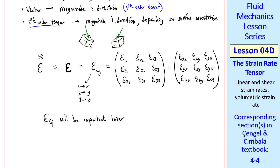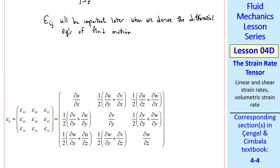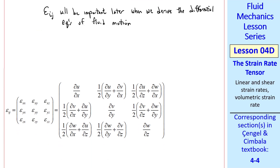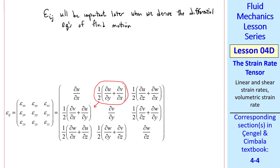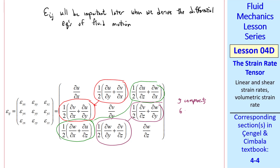ε_ij will be important later when we derive the differential equations of fluid motion, where we relate the strain rate tensor to the stress tensor. Using the components derived previously, we have the normal strain rates on the diagonals and the shear strain rates on the off-diagonals. This tensor is symmetric, since ε_xy equals ε_yx, ε_xz equals ε_zx, and ε_yz equals ε_zy. So there are nine components in the tensor, but only six are independent.